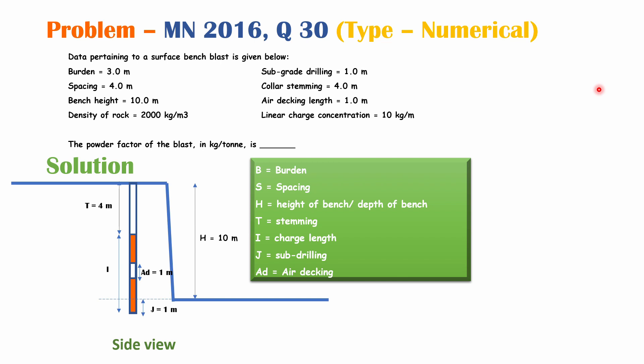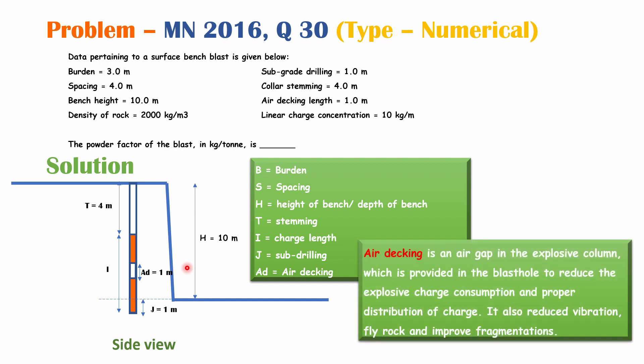Let's visualize the question. In this figure, the blast hole is shown along with the charge length I, stemming, air decking J, sub-drilling, and bench height H. Air decking is an air gap in the explosive column provided in the blast hole to reduce explosive charge consumption and improve distribution of charge. It also reduces vibration, fly rock, and improves fragmentation. In the air gap there is no explosive charge.